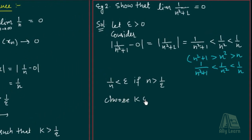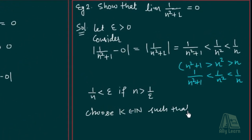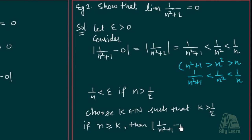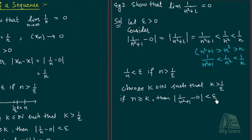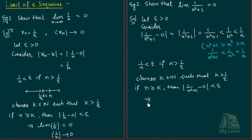So choose k belonging to natural numbers such that k is greater than 1/epsilon. If n is greater than or equal to k, then |1/(n² + 1) minus 0| is less than epsilon, which implies limit of 1/(n² + 1) equals 0. That is, the sequence 1/(n² + 1) converges to 0.